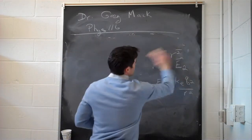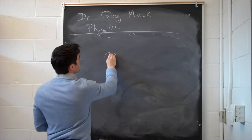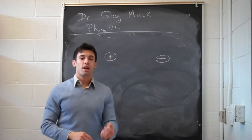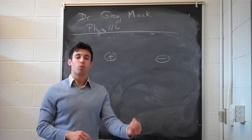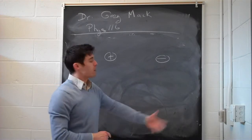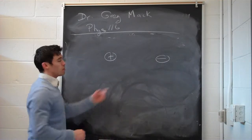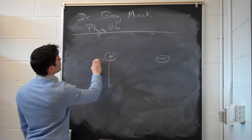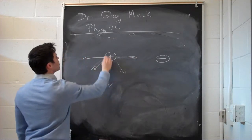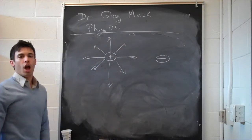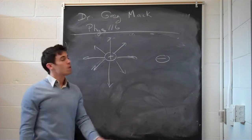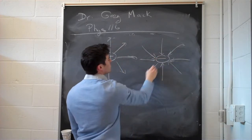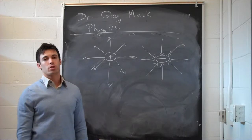We represent this electric field by drawing electric field lines. A rule is that the electric field points in the direction where a positive charge would move — the direction a positive charge would feel the force. So for a positive charge, a positive test charge would be repelled, meaning the electric field is directed radially outward. For a negative charge, you'd have the opposite situation — the arrows would point towards the negative charge.